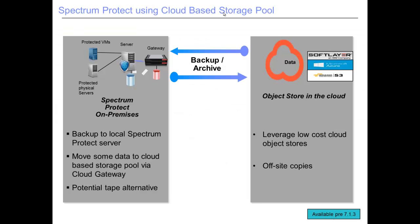Our current version of Spectrum Protect is level 7.1.3. Prior to that, if you wanted to use Spectrum Protect with a cloud storage pool, we would utilize a gateway. A cloud storage pool utilizes the cloud to store the data we're backing up. In this scenario, we have the Spectrum Protect server and the different production machines we're protecting — they may be databases, virtual machines, or workstations. Those machines back up to the Spectrum Protect server, which then stores that data in a storage pool on a cloud, using a gateway to connect.